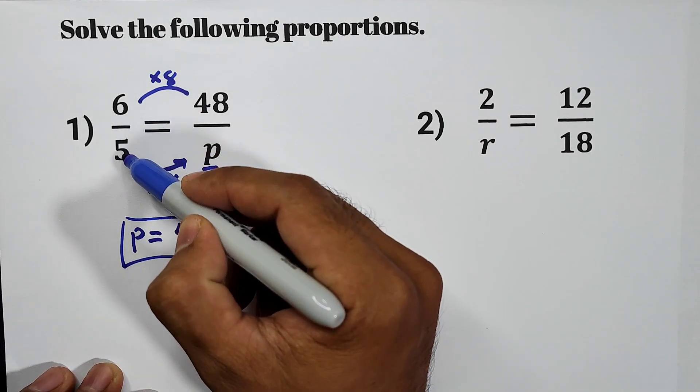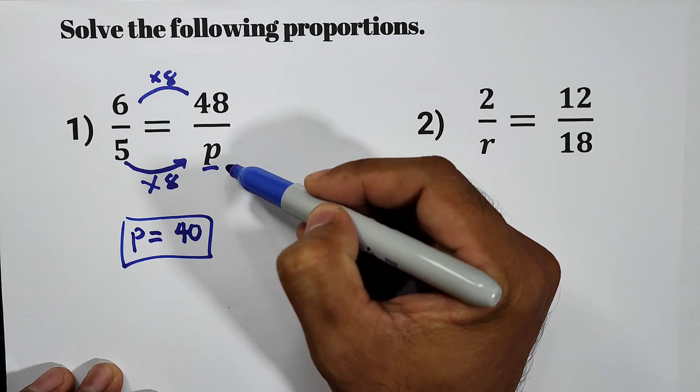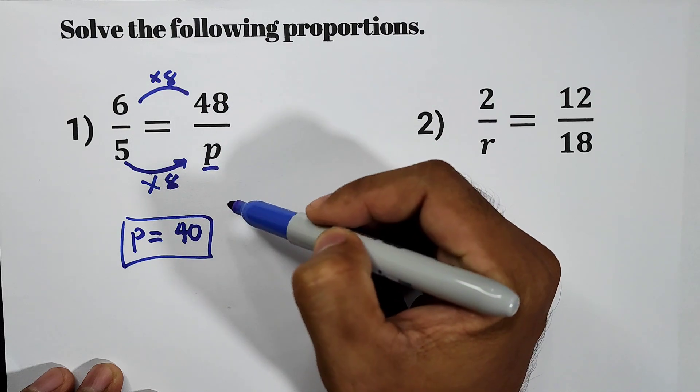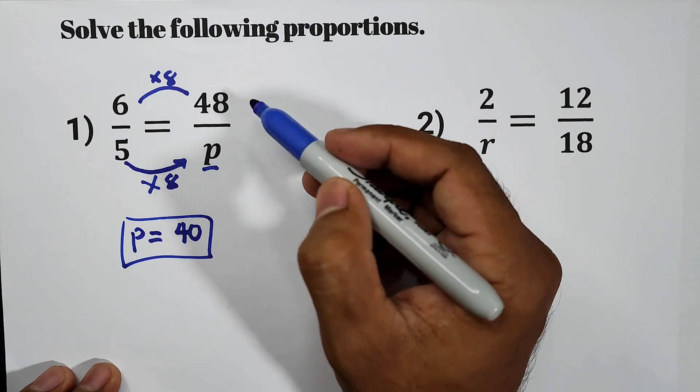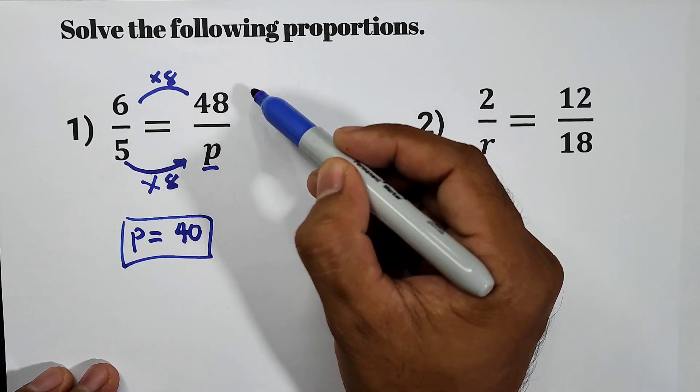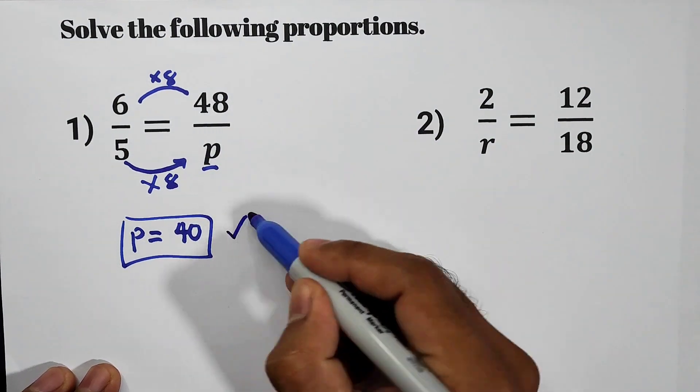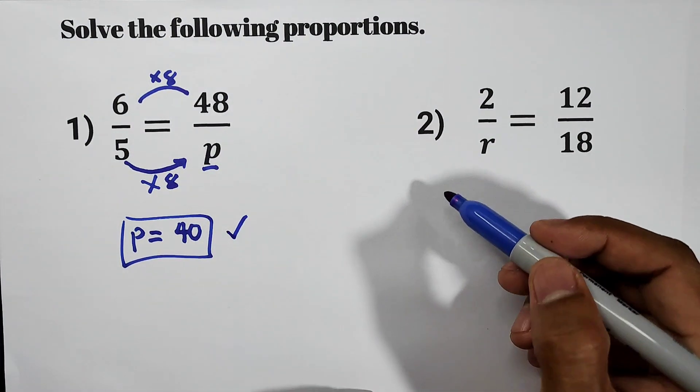Let us check. 6 over 5, that is equal to 48 over 40. Since 48 and 40 have a common factor which is 8, 48 divided by 8 is 6, 40 divided by 8 is 5. Now let us have item number 2.